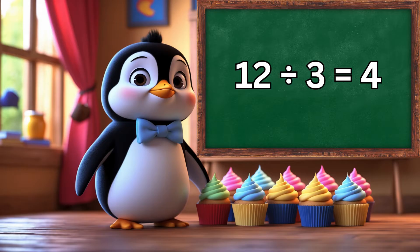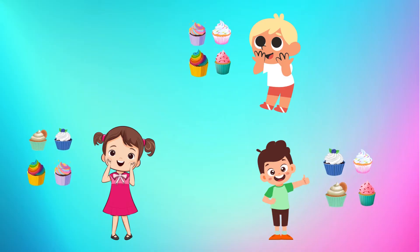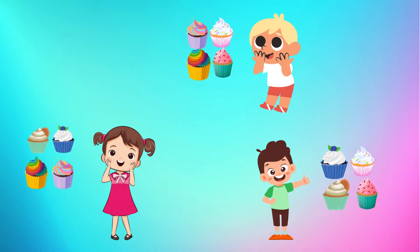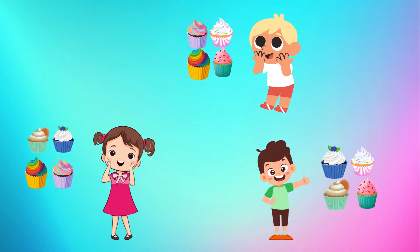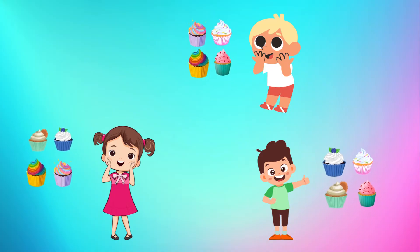This is a division sentence. It says 12 divided by 3 equals 4. That means if you have 12 cupcakes and 3 friends, each friend gets 4 cupcakes.